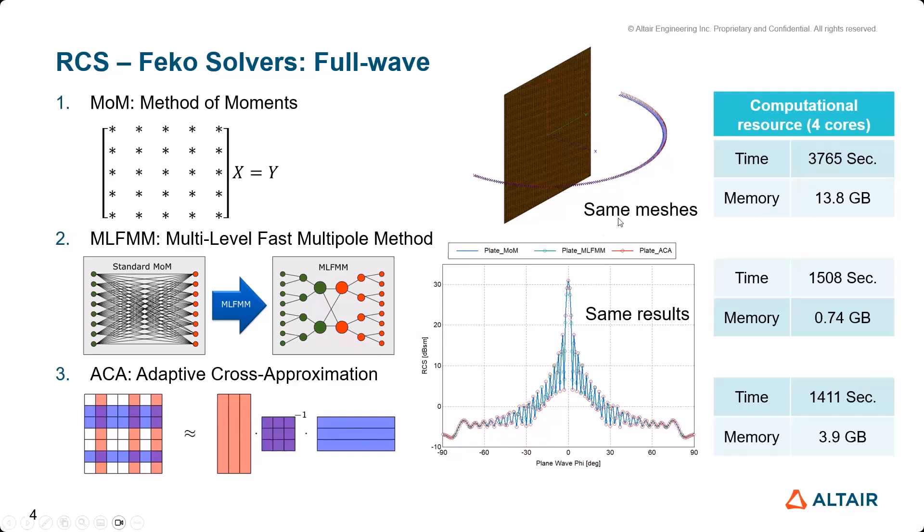ACA is designed to use selective rows and columns to compress the impedance matrix, so it's called cross-approximation. In terms of computational resources, as you can see here for the same simulation structure, ACA and MLFMM give you a benefit in memory saving and computational time saving.